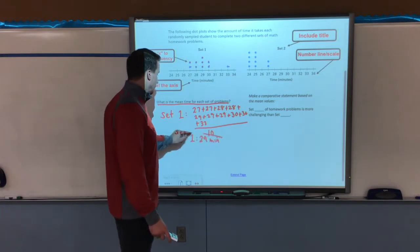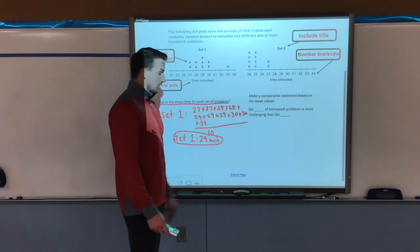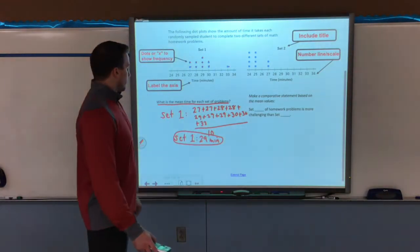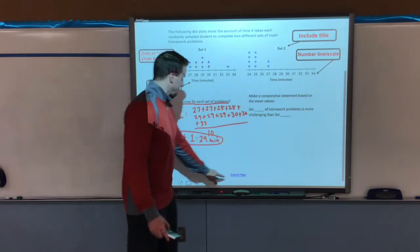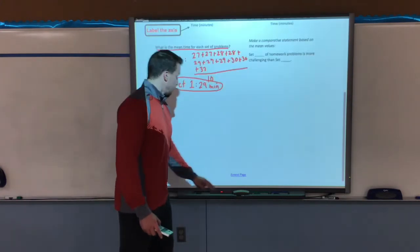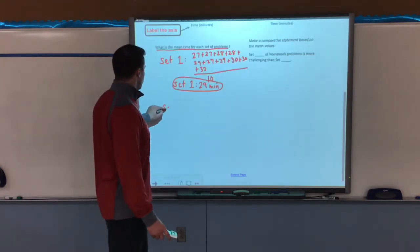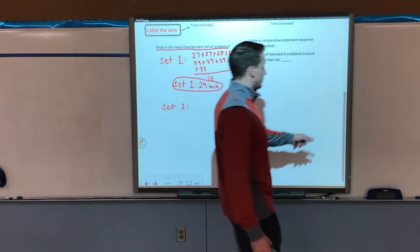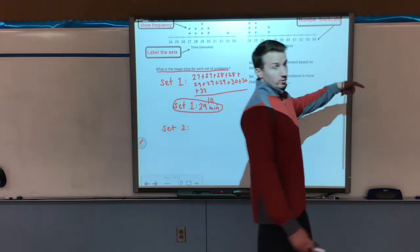Remember, no bare numbers. We need to make sure that we have a label with our answer. So that's for set one. I'm going to do now set two, down below it. Again, super important to make sure you show your work so you don't make mistakes, which is why I wrote all those values out.